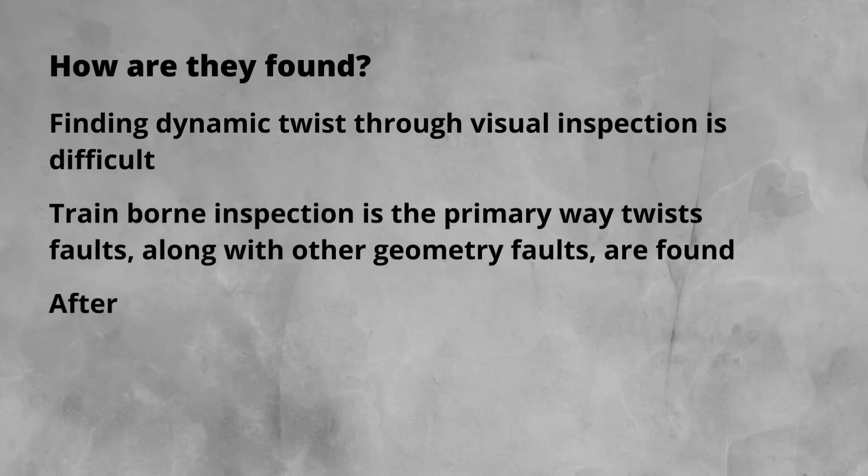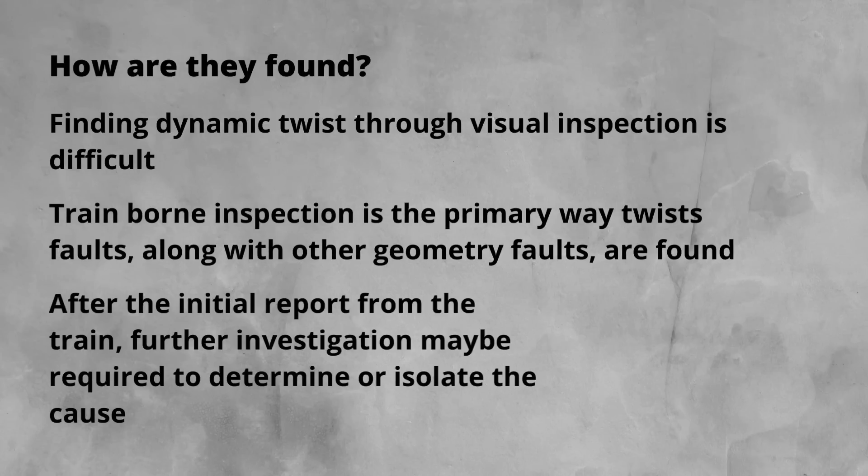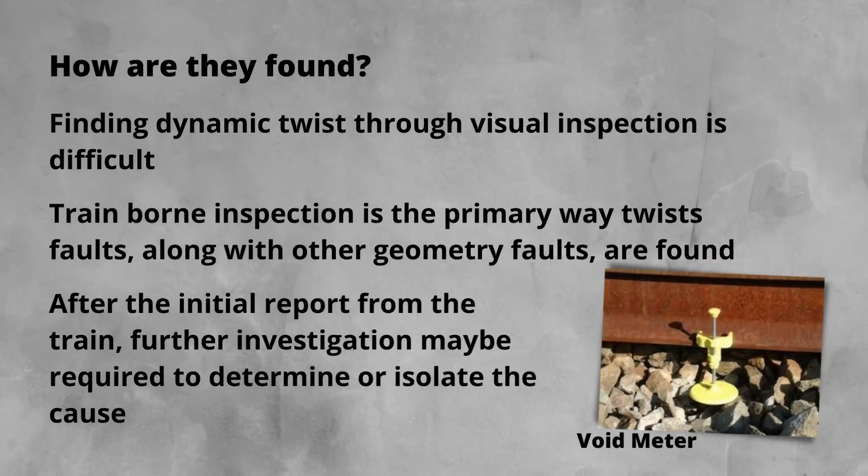In some areas that are complex, further investigation might be required to isolate the issue causing the twist. This is where void meters could be installed through the site, left to allow them to record the track movement before the maintenance team returns to remove the issue.